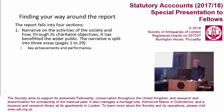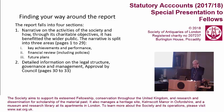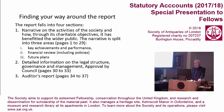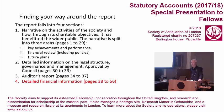These cover key achievements and performance, financial review including policies and future plans. The second element is the detailed information in the statutory report accounts on the legal structure, the governance and management and recording the approval given by council — that's on pages 30 to 33. Then the auditor's report on pages 34 to 37, and finally the detailed financial information set out between pages 38 and 56.